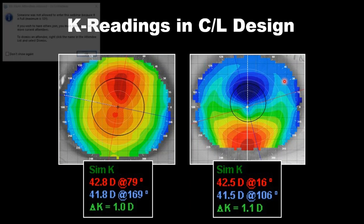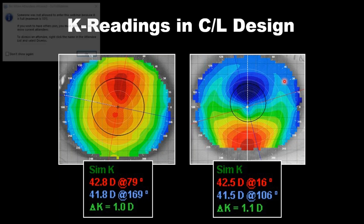K readings have value to us when we fit the normal eye, but K readings can be very poor and misleading in describing the post-surgical eye, the diseased eye, or an eye with some kind of trauma. De la queratometría regular nos pueden dar mucha información con una córnea normal, pero obviamente no son buenos predictores con córneas lastimadas, con trauma, o con córneas irregulares.